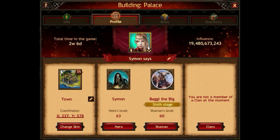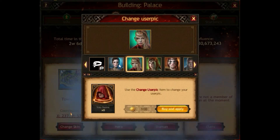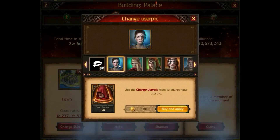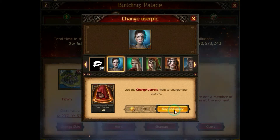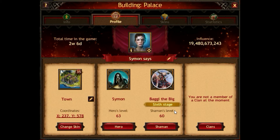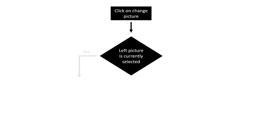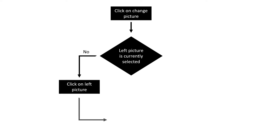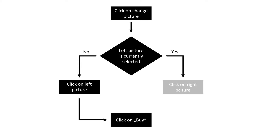Now the left one is selected, so we choose the right one and then click Buy. Then we do the same, but since the right one is currently selected, we choose the left one. Here is the scheme: we click the button to change the picture. If the left one is not currently selected, we choose it and click Buy. If it's already chosen, we choose the right one and click Buy.